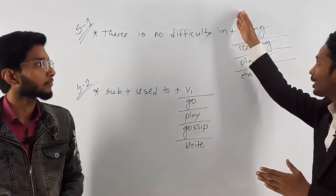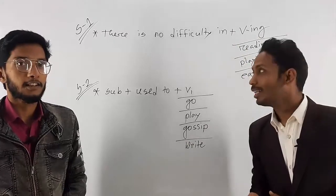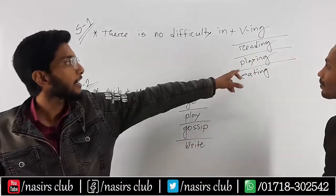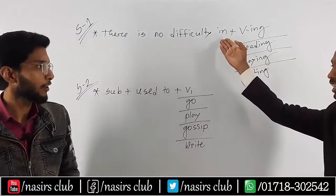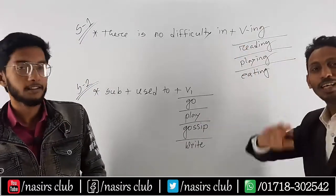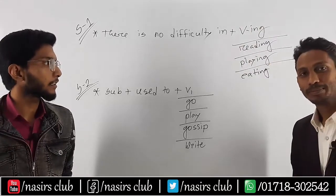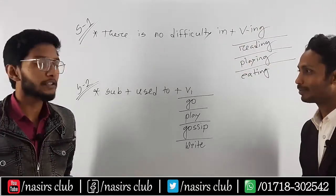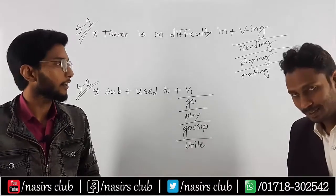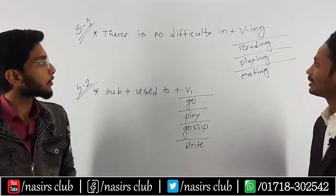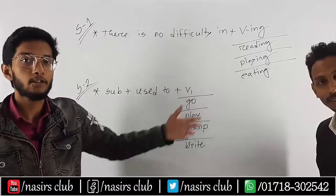So we can use a verb with this structure. Of course, we have to add '-ing' at the end of the verb. If we have to use a preposition, we can use '-ing'. In English, we know that if we use a preposition, we add '-ing' to the verb. So, 'there is no difficulty in playing.'